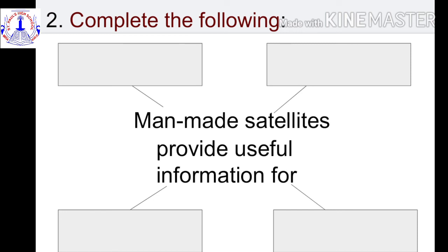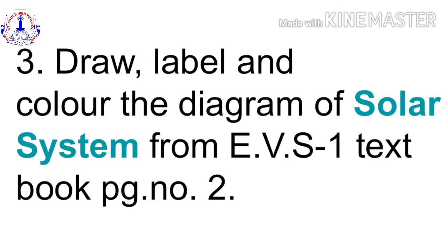Second, write about how man-made satellites provide useful information. And third, draw, label, and color the diagram of the solar system from EVS-1 textbook, page number 2.